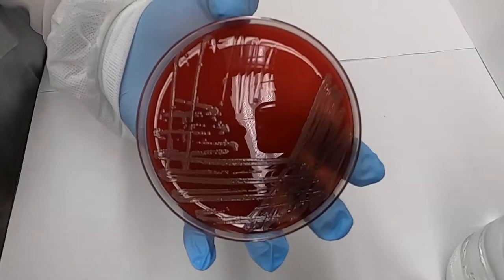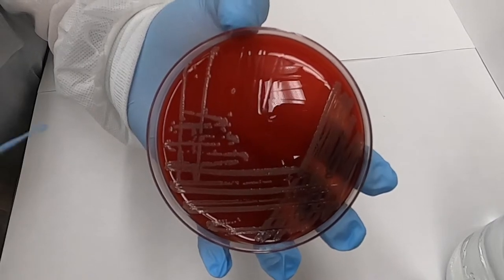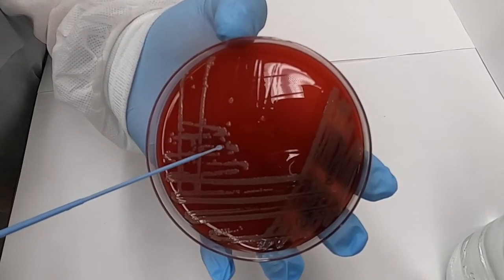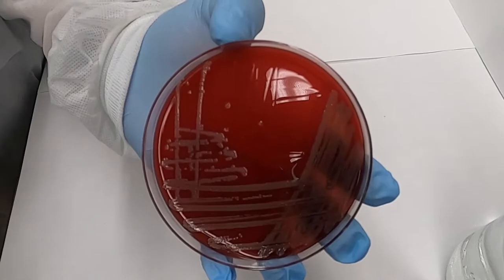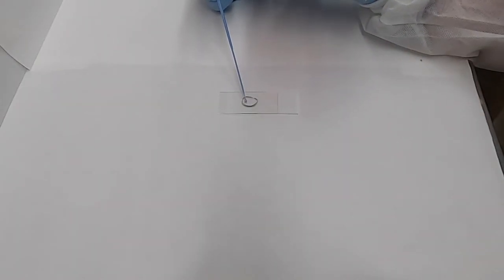Next, you're going to use a sterile loop to select a colony in which you'd like to visualize. Remember, just touch the tip of the colony. There's billions of bacteria there and you only need a little bit. Spread those around, get a nice even layer and wait for your slide to dry.